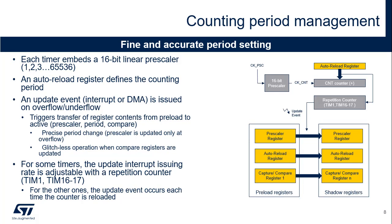Each timer embeds a linear clock prescaler, which divides the clock by any integer between 1 and 65,536. The counting pace can therefore be precisely adjusted. For instance, a division by 48 will yield a precise 1 MHz counting rate when the APB clock is 48 MHz. The auto-reload register defines the counting period. In down-counting mode, the counter is automatically reloaded with a period value when it underflows. In up-counting mode, the counter rolls over and is reset when it exceeds the auto-reload value. In center-aligned mode, up- and down-counting, the counter counts from 0 to the auto-reload value minus 1.